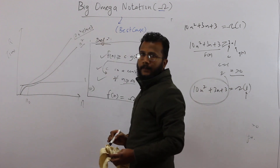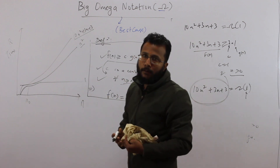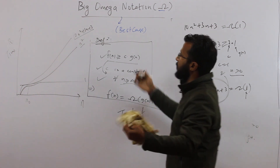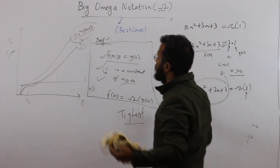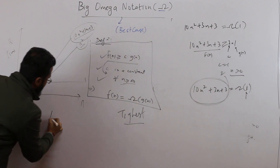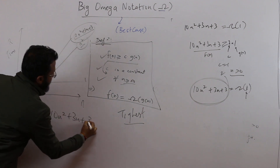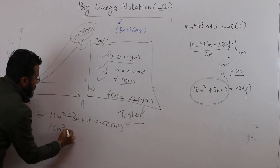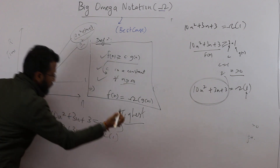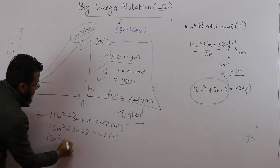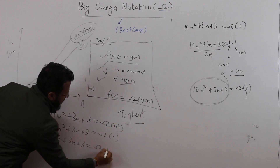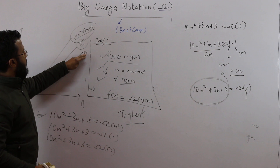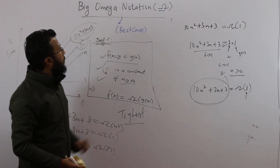When doing Omega notation, we are looking for the tightest lower bound — the one closest to f(n). The closest lower bound is n², so it is always best to write that 10n² + 3n + 3 is Omega of n². Nevertheless, saying it is Omega of 1 is also technically true. Similarly, I can also claim that 10n² + 3n + 3 is Omega of n — this is also true, as f(n) is also lower bounded by the n curve. This is how Omega notation works.